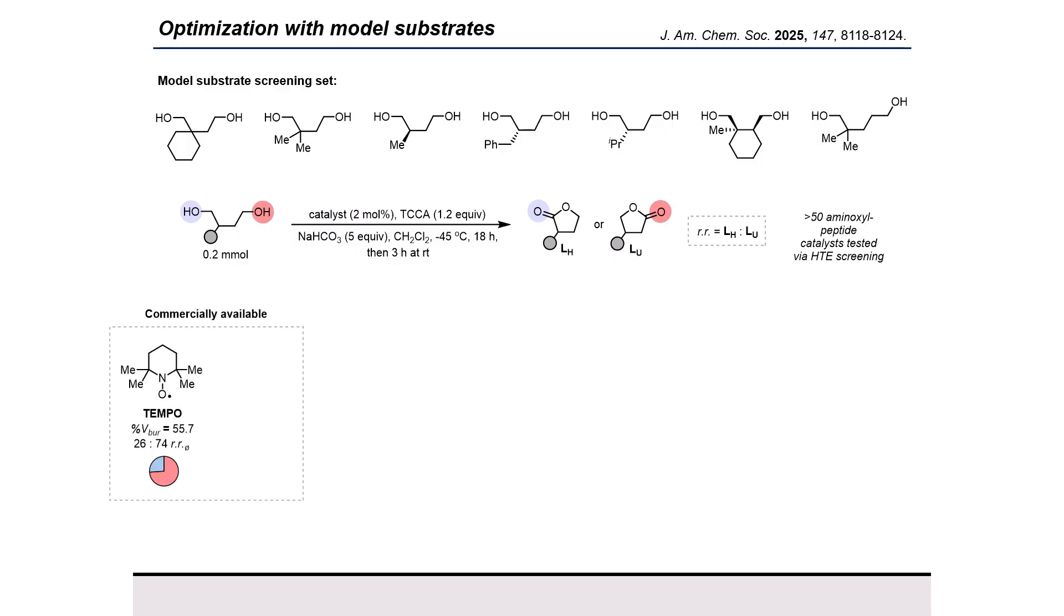We first tested the performance of commercially available aminoxyl radicals using trichloroisocyanuric acid, TCCA, as our terminal oxidant, sodium bicarbonate as the base, and dichloromethane as a solvent. We used the buried volumes of the aminoxyl catalyst to quantify the accessibility of the active sites, by measuring the percentage of space occupied by the catalyst core within a sphere of 2.5 angstrom radius centered around the oxygen atom. As expected, due to the steric shielding of the active site by four adjacent methyl groups, TEMPO gave a moderate average selectivity of 74% for the less-hindered site. In contrast, this sterically accessible ketoABNO was almost completely unbiased for either site.